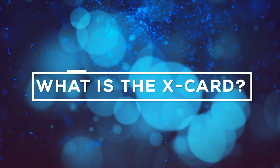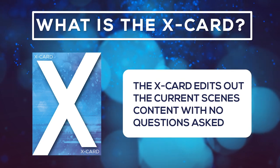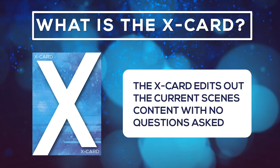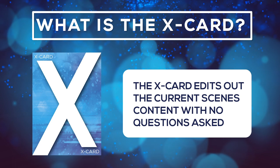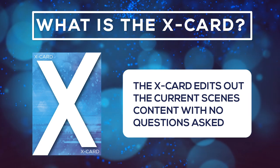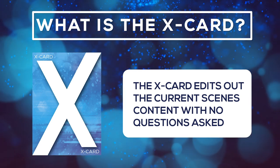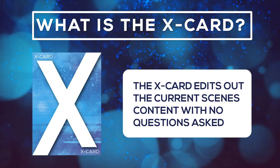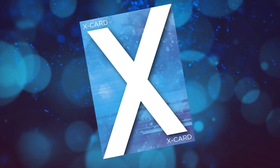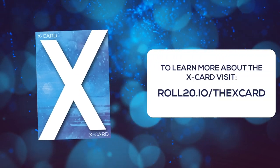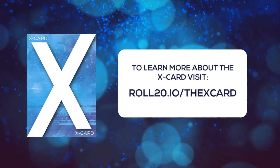So what is the X card? An X card edits out the current scene's content with no questions asked. This puts an immediate stop to the action. So at any point during the game, if a player or GM finds that they are uncomfortable with the subject matter or actions happening in the game, they can drop an X card. There are a few other ways to use the X card, so check out the link in the description below.